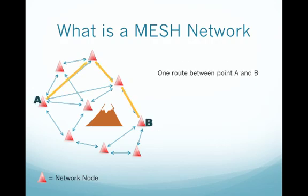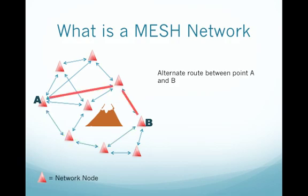For example, here we've got point A and point B, and you can see the route — there's one way of getting the traffic from point A to point B, routing up to one node and then down through a couple more. Here's another possible route, and yet another one. A mesh network may have multiple routes, and a node not only originates traffic but may also receive traffic and pass it on.